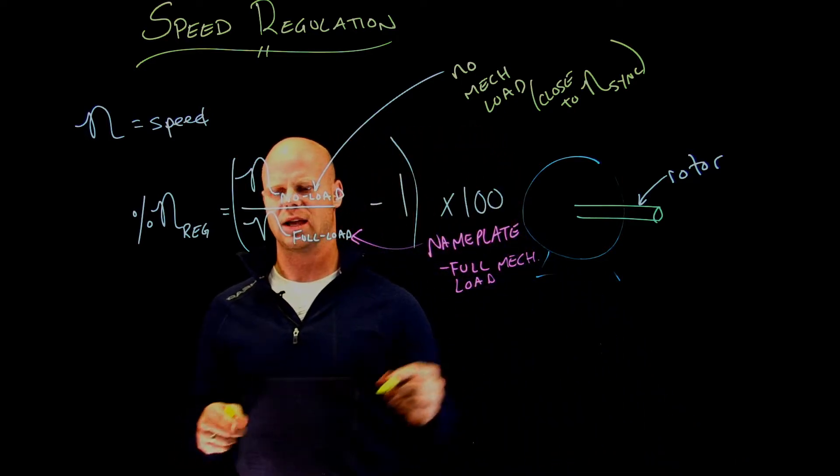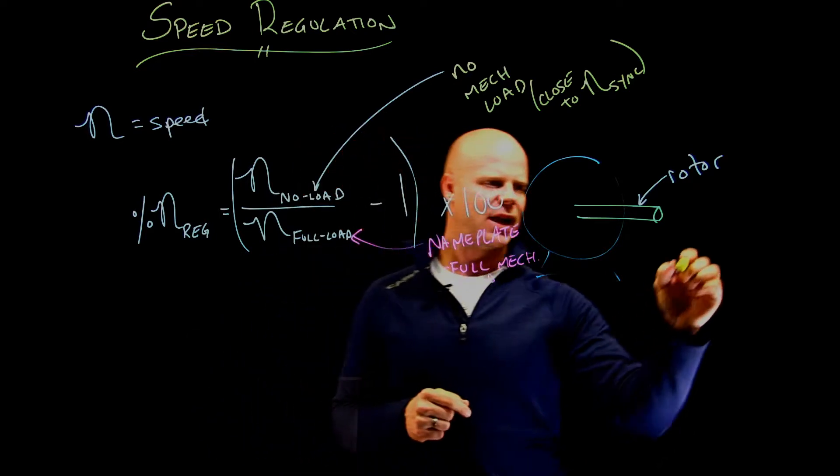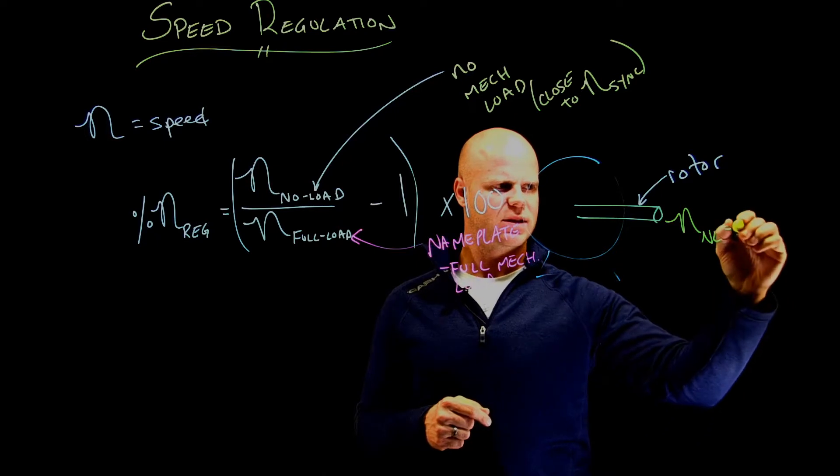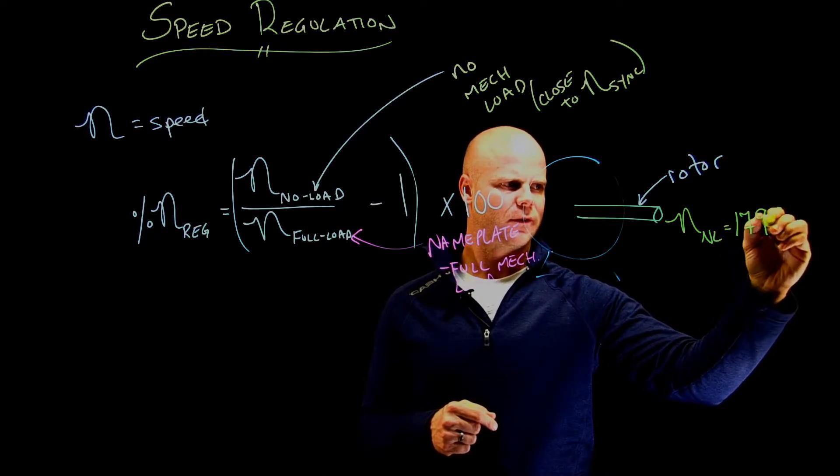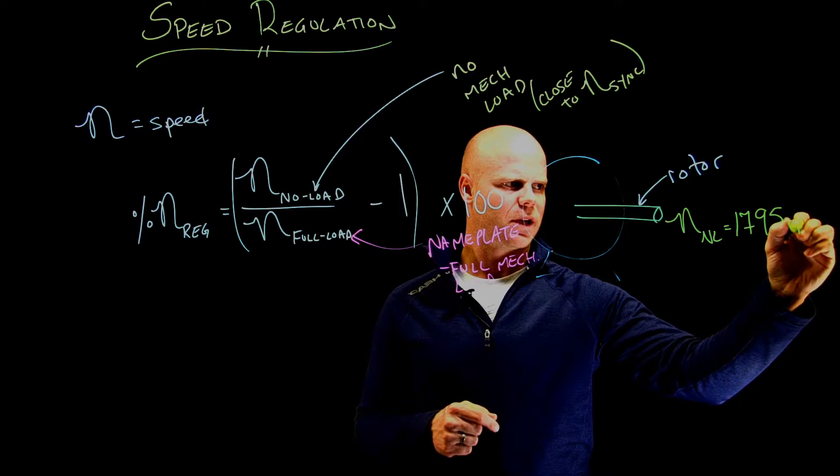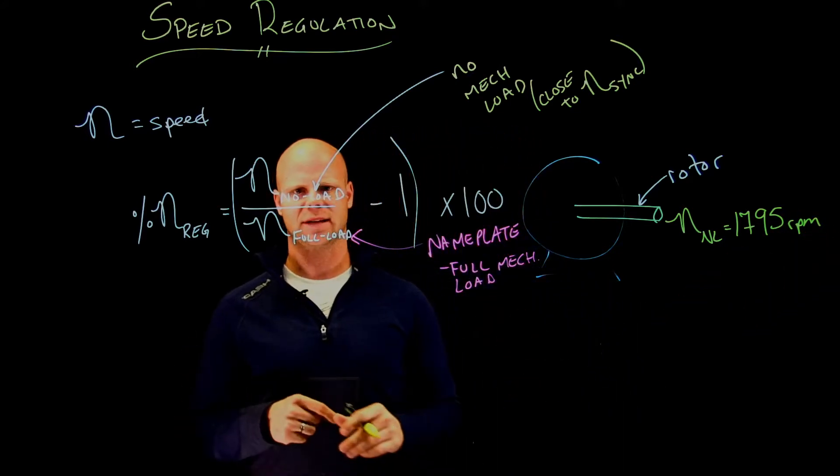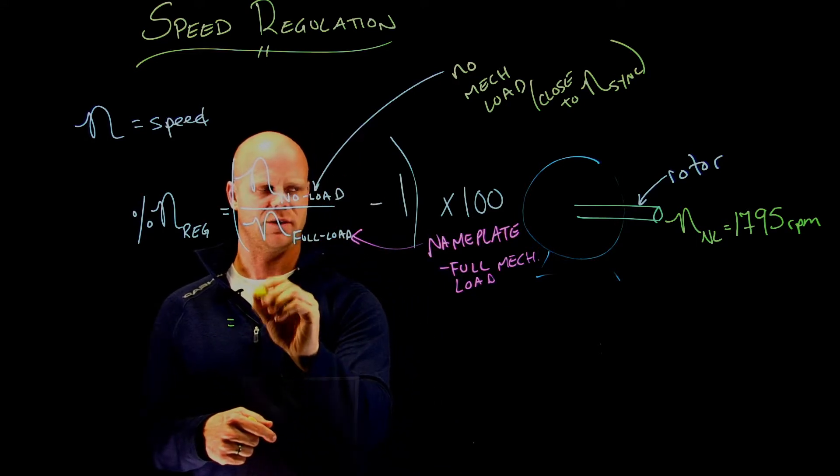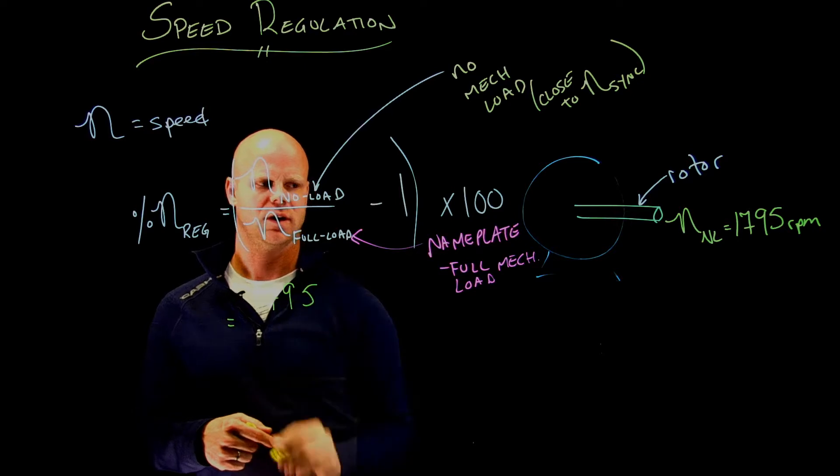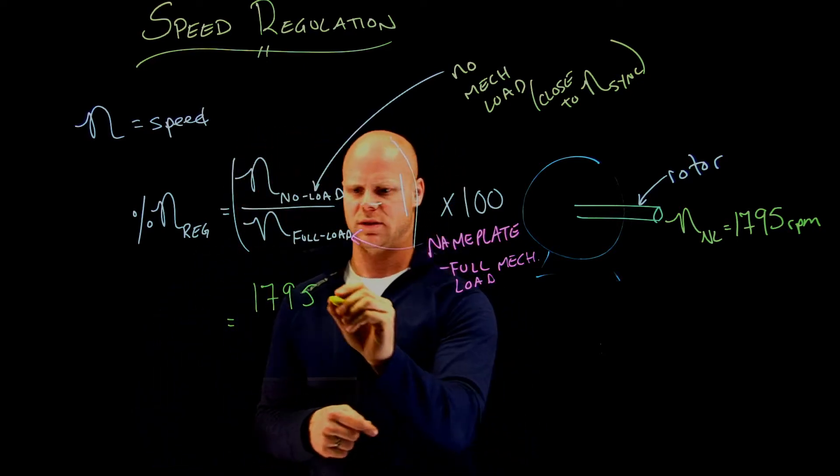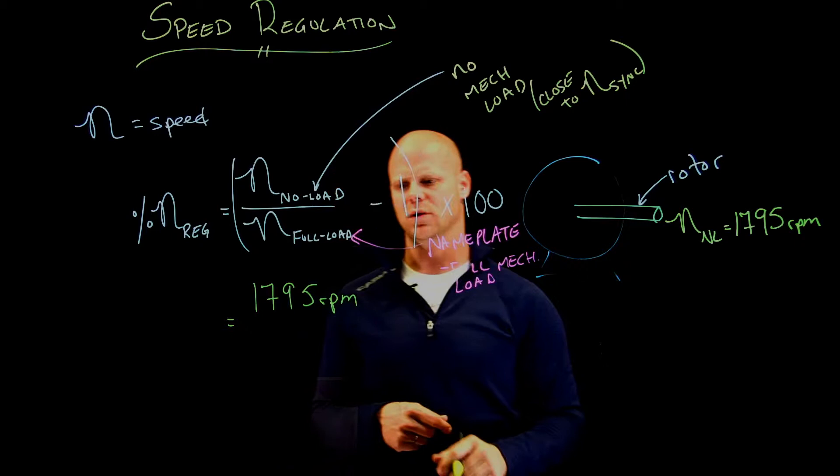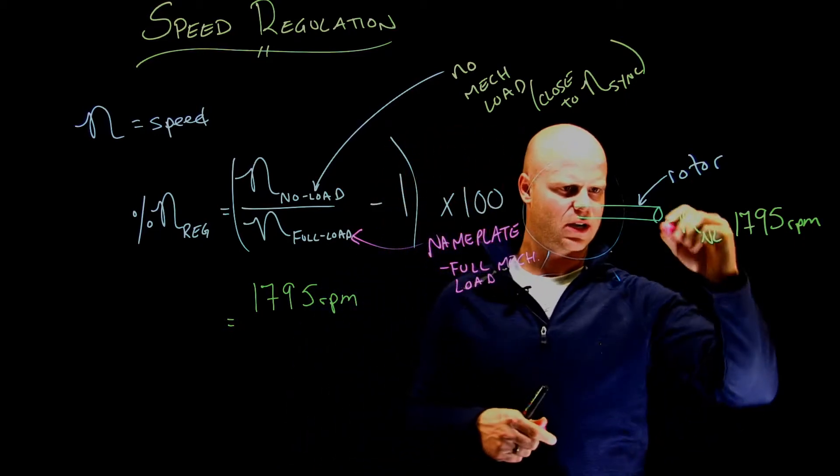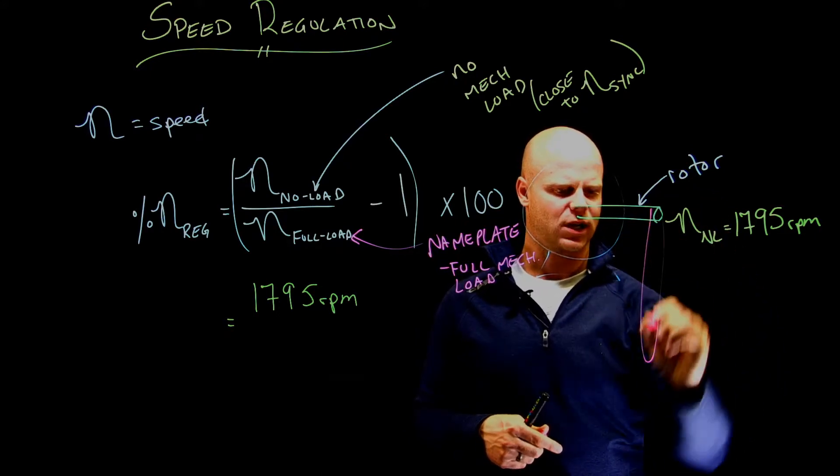Let's just say I have a motor that the speed at no-load is 1795 rpm. There's nothing connected to it—that is a no-load speed. So I have 1795 as my no-load speed. Then we are going to connect this to a conveyor belt.